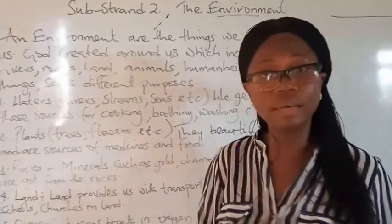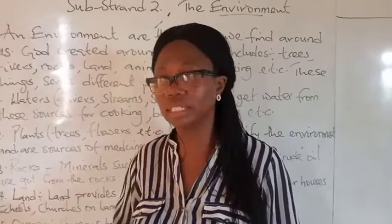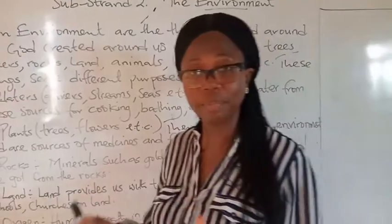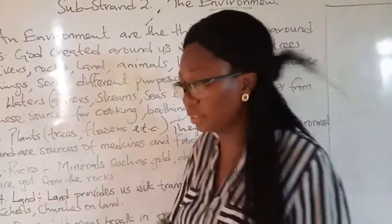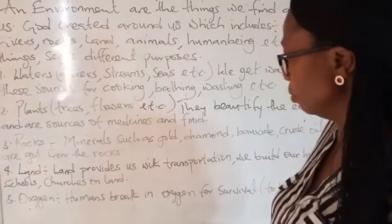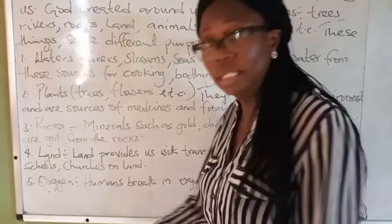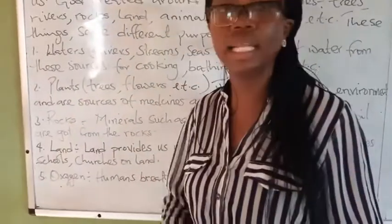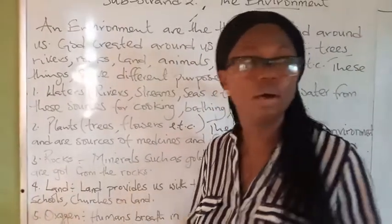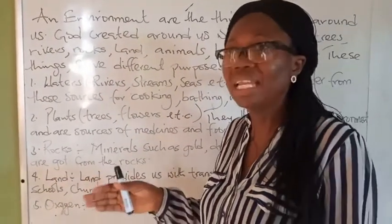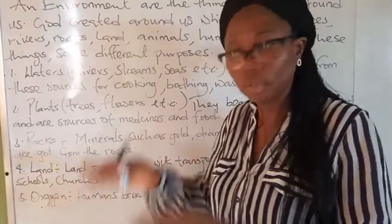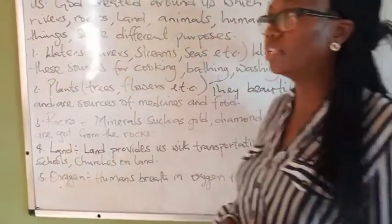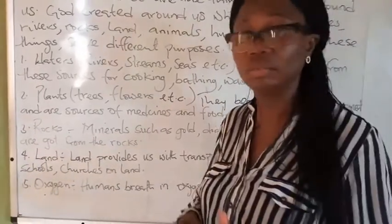We have rocks. Rocks are hard stones. We find minerals under the rocks, such as gold and petroleum, and they all serve purposes for us. We also have land, which is the solid land we step on and are all standing on. The land serves so many purposes — transportation. We build our houses, churches, and schools on land. You cannot build your school on water, and we also have good transportation on land. There are other advantages to what we use land for, and it is also part of the environment.